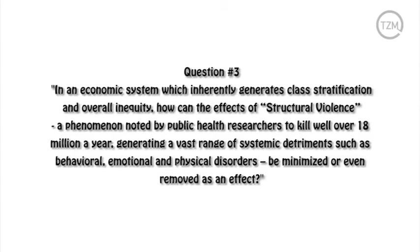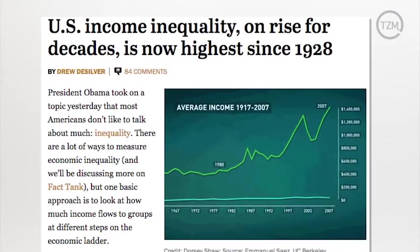So, back to the question. How can the effects of structural violence be minimized or even removed as an effect? The answer, of course, is it can't be removed. It's a built-in system effect. And the longer we have the market, the more holocausts will occur. As far as being minimized, yes, I guess some kind of wealth reallocation could emerge. But the effect would be minimal as it still does little to address the true structural source of the problem.